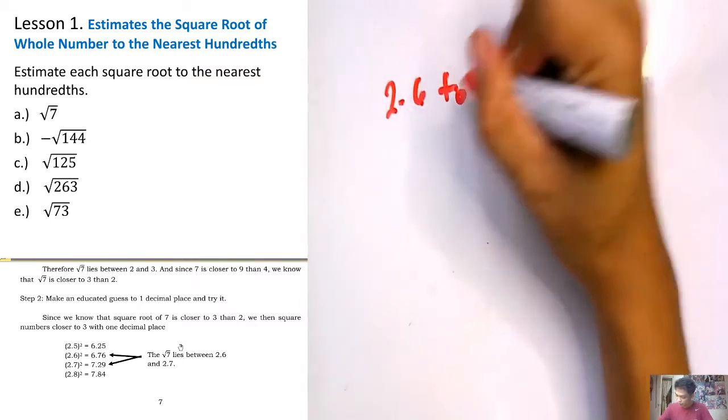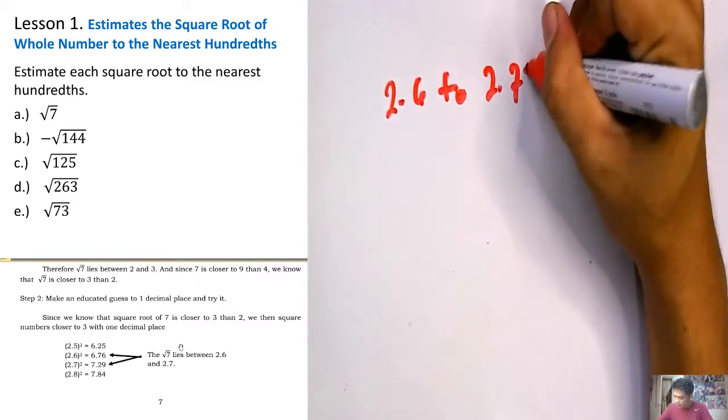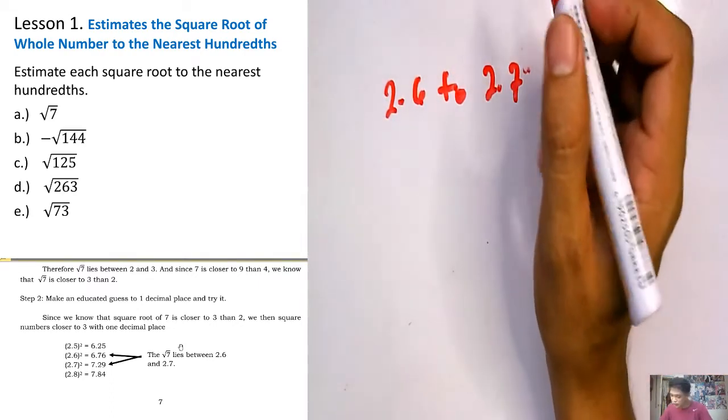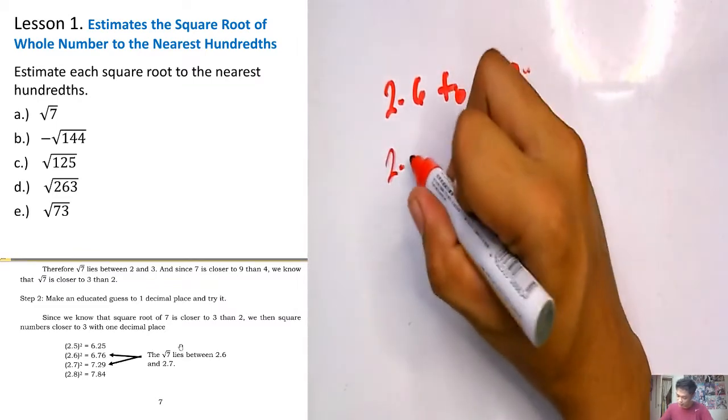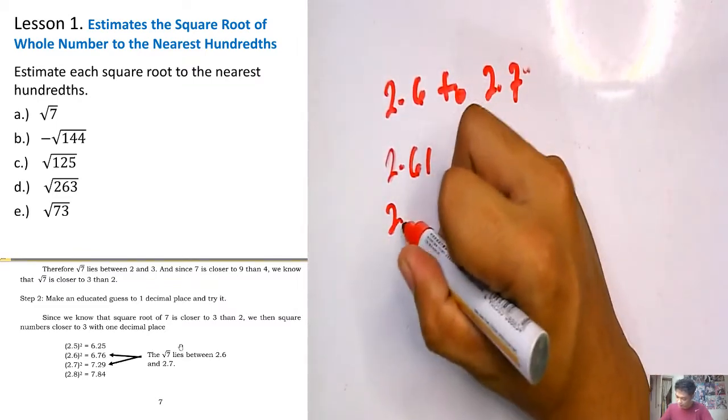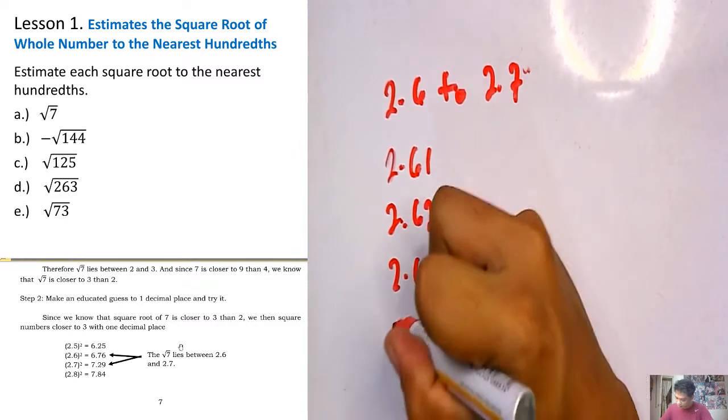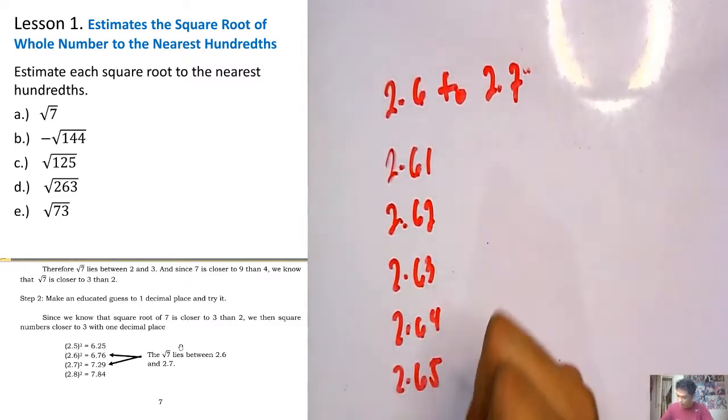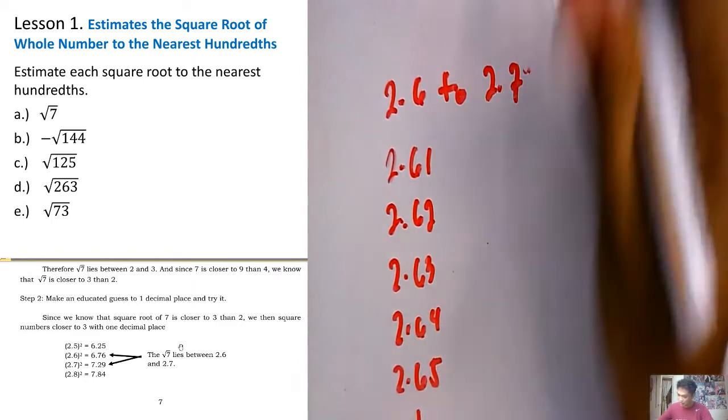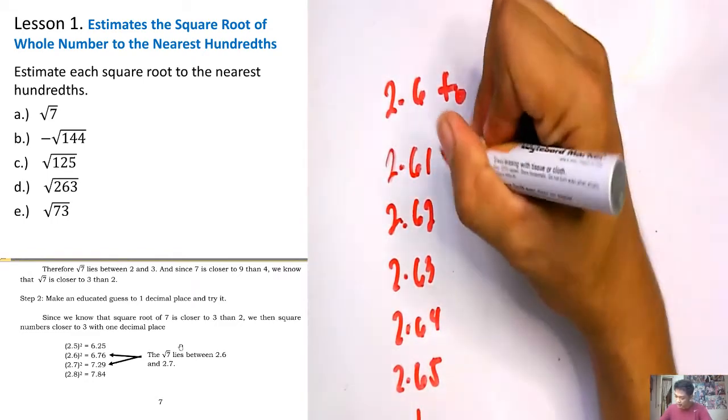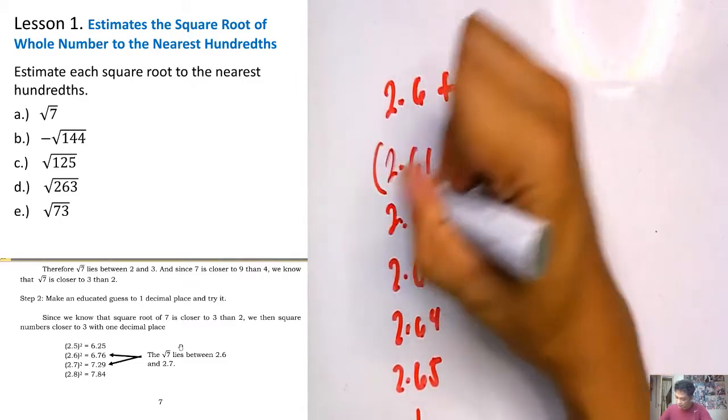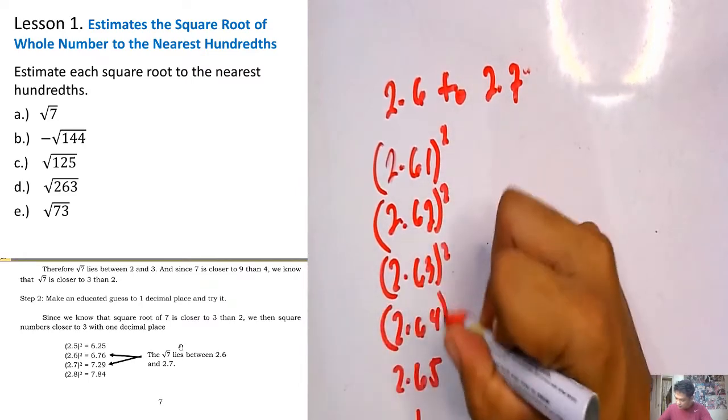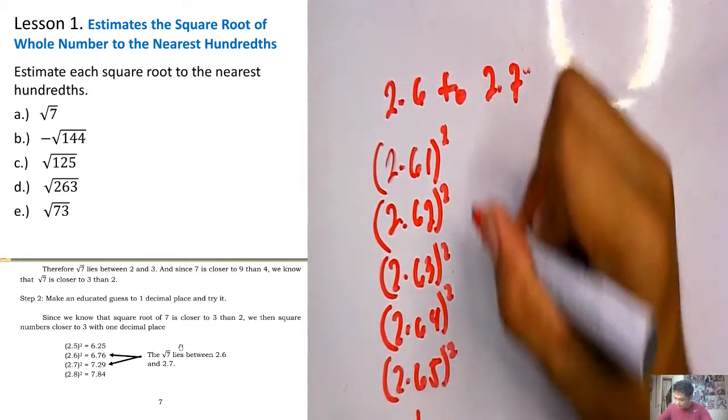What are the numbers between 2.6 and 2.7? We have 2.61, 2.62, 2.63, 2.64, 2.65 and so on. There are a lot of numbers, so we end on 2.65. For 2.61, you get the square, and so on for each value.